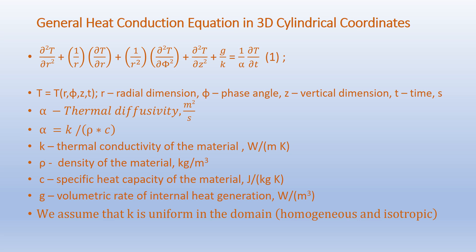Here temperature T is a function of R, φ, Z, and t. R represents the radial dimension, φ the phase angle, Z the vertical dimension, and lowercase t is time in seconds. Alpha is the thermal diffusivity in m²/s, equal to K over ρC. K is the thermal conductivity in W/m·K, ρ is the density in kg/m³, C is the specific heat capacity in J/kg·K, and G is the volumetric rate of internal heat generation in W/m³. We assume thermal conductivity K is uniform — homogeneous and isotropic in the medium.